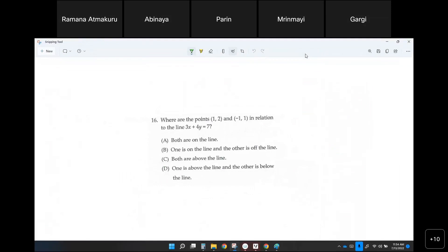The points 1 comma 2 and negative 1 comma 1 in relation to the line. Let's say if my x comma y is 1 comma 1, what can you see about that if we plug in 1 comma 1?